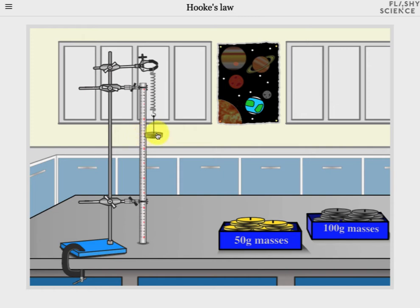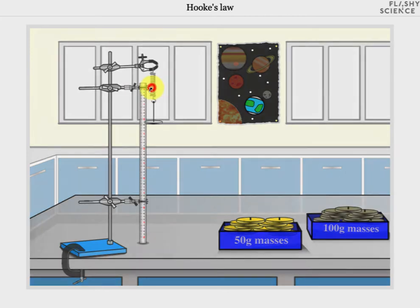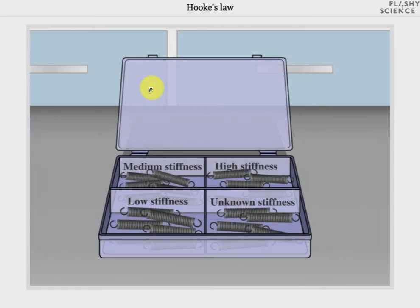Once the mass holder is empty you can change the spring by clicking on it to move to the spring selection screen. The medium stiffness spring is the default spring that the experiment started with and you can use this again if you wish.